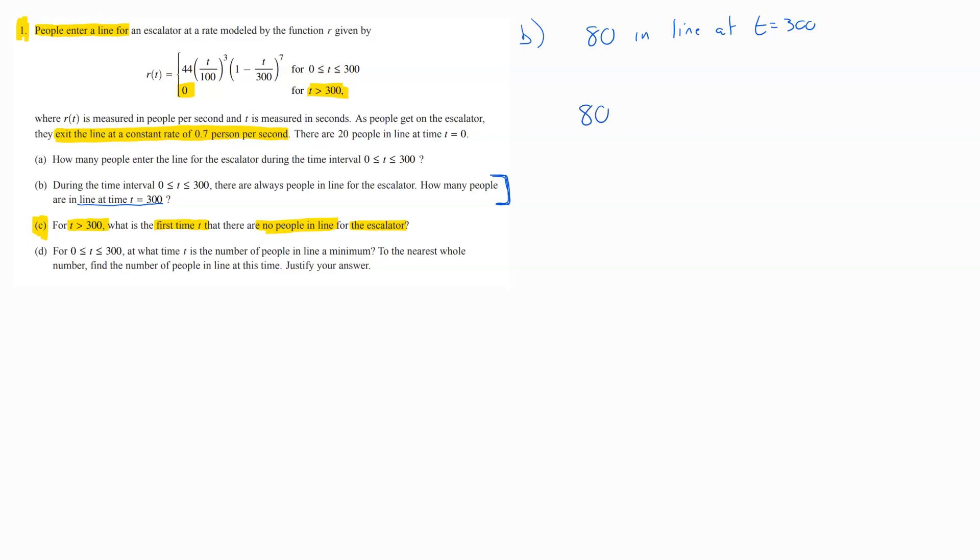So, if we have 80 people and we divide that by that rate of 0.7 people per second, that's going to end up giving us the amount of time it takes to get rid of 80 people. Because we know we're leaving at 0.7 per second.